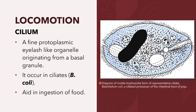Protozoa may also move via cilia. Cilium is a fine protoplasmic eyelash-like organelle originating from the basal granule, exhibited by ciliates such as Balantidium coli. Aside from locomotion, cilia also aid in the ingestion of food. The diagram shows the motile trophozoite form of Balantidium coli, a ciliated protozoan of the intestinal tract of pigs, with cilia originating from basal granules embedded in the pellicle or ectoplasm.